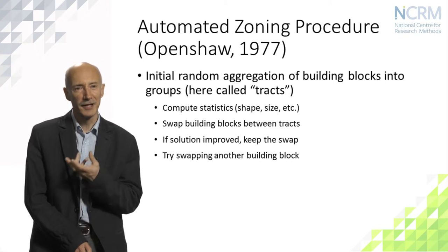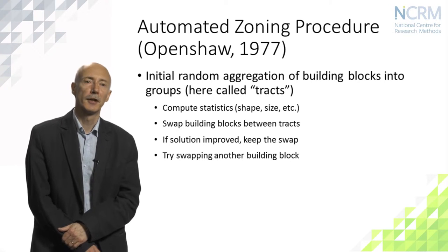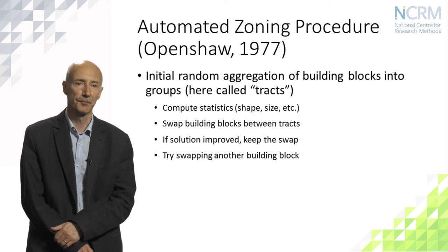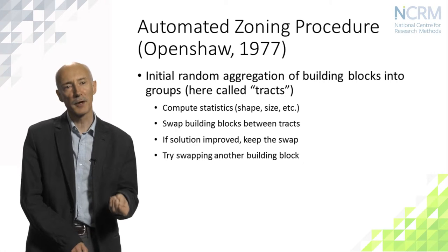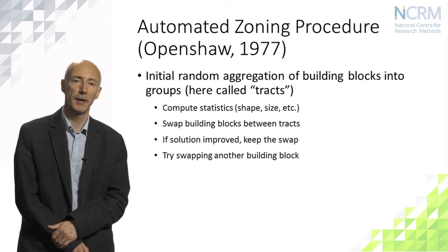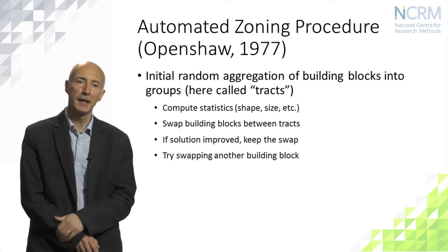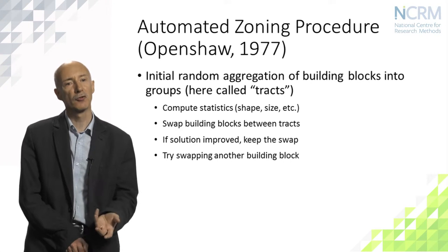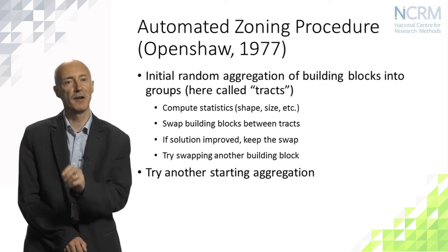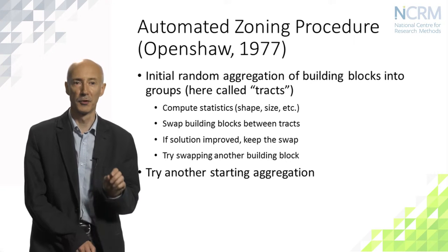We create an initial random aggregation of these tracts, a bit like putting together a small area of a jigsaw provisionally, and then compute statistics relating to the size, shape, and other design criteria for the final configuration. We then try swapping some of the building blocks — taking one jigsaw piece off one small block and putting it onto a neighbouring block — then recalculating the statistics. If that results in an improvement to the overall solution, we keep that swap.